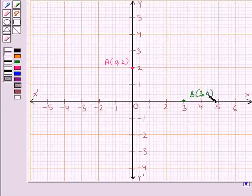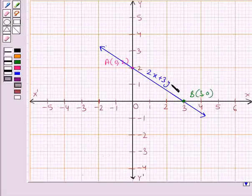Now we join points A and B. This line AB is the graph of the equation 2x + 3y = 6.